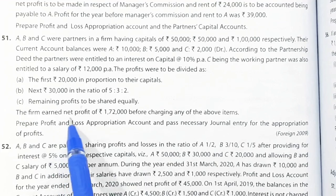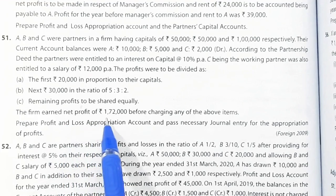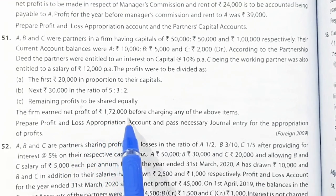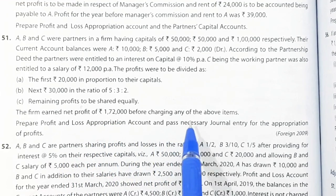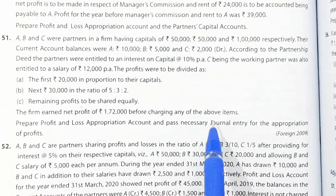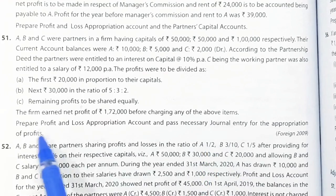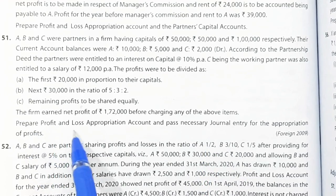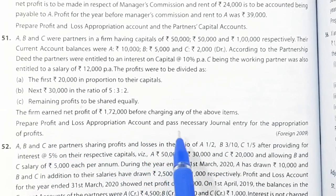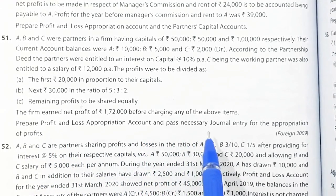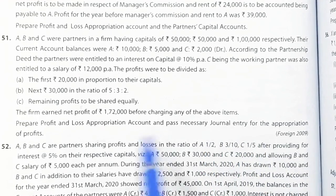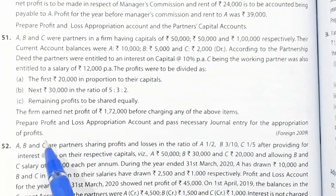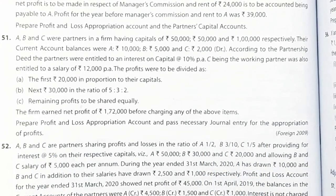The firm earned a net profit of Rs. 1,72,000 before charging any of the above items. Prepare the profit and loss appropriation account and pass necessary journal entries for the appropriation of profits.